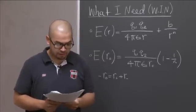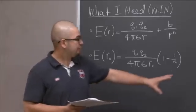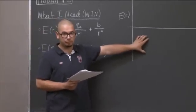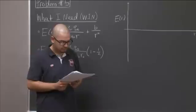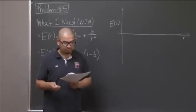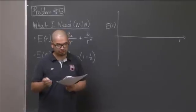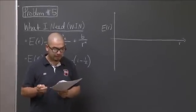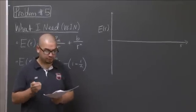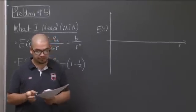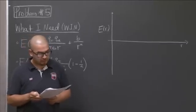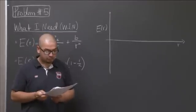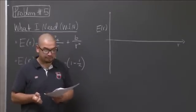The problem reads as follows: On the same graph below, and this is the actual graph we're going to be doing the problem on, for one, BeF2, beryllium fluoride, and two, BeO, beryllium oxide, sketch the variation in potential energy with internuclear separation, R, between a cation and an anion pair in each compound.